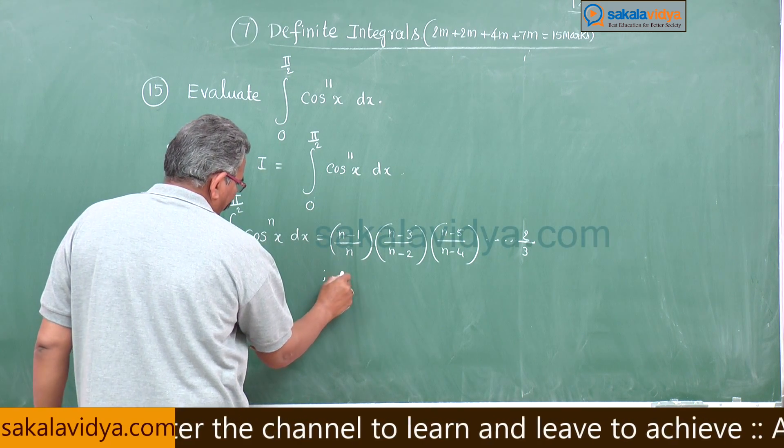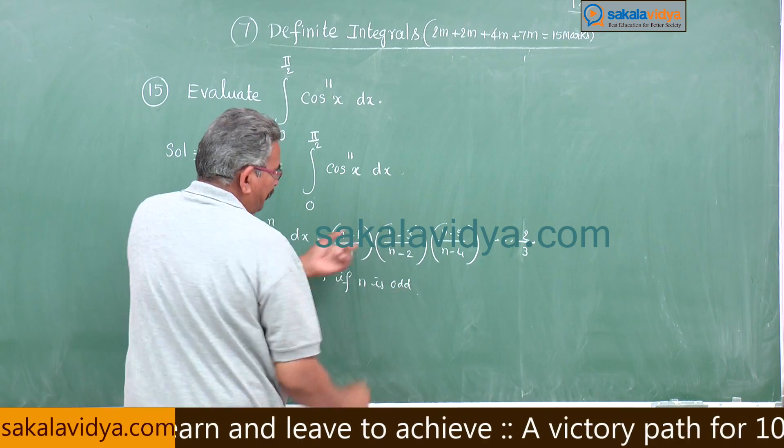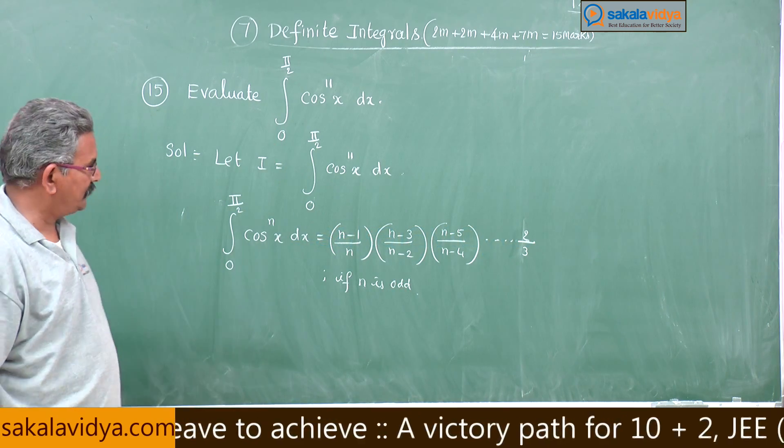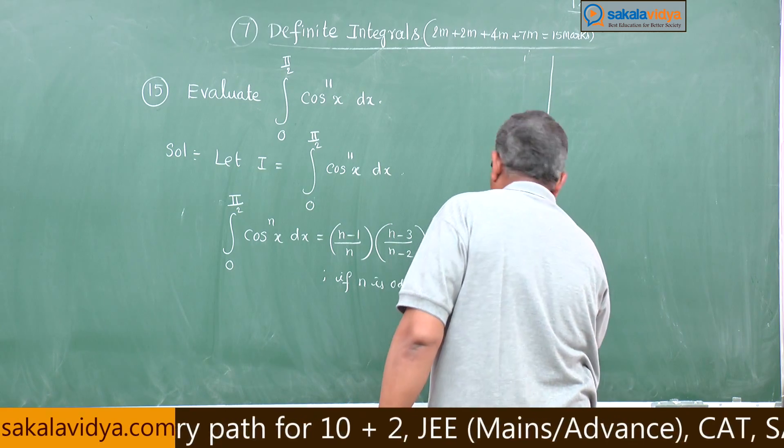This is odd number. Odd number means 2 by 3, that is all. If n is odd, you would not get pi by 2, it does not end with pi by 2, it ends with 1 or 2 by 3. Let us come to the problem.